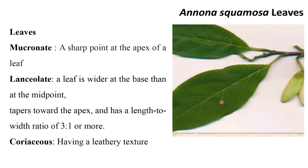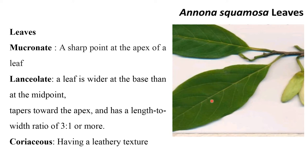Leaves are ovate, obovate or lanceolate. Lanceolate means a leaf is wider at the base than at the midpoint, tapering towards the apex with a length-to-width ratio of 3:1 or more. Then coriaceous, meaning having a leathery texture. Glabrous, unicostate, reticulate, gland-dotted. This is a characteristic feature of Annonaceae — the leaves are aromatic and gland-dotted. You have to remember these points.